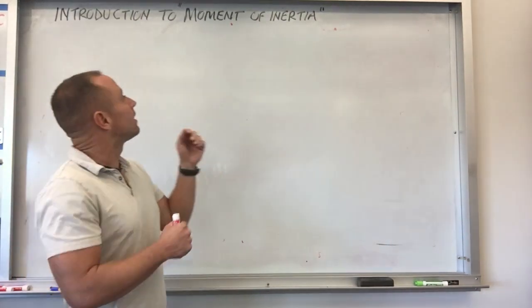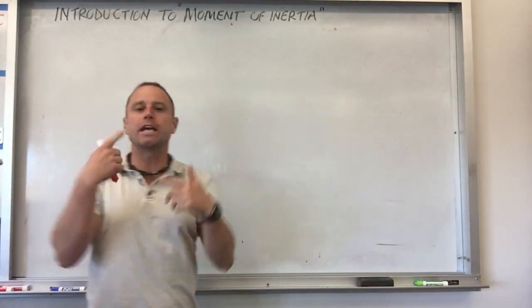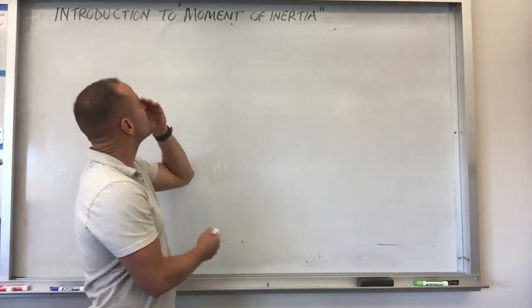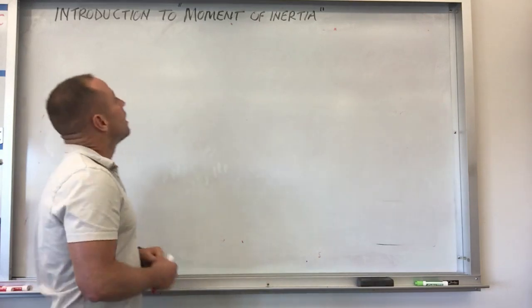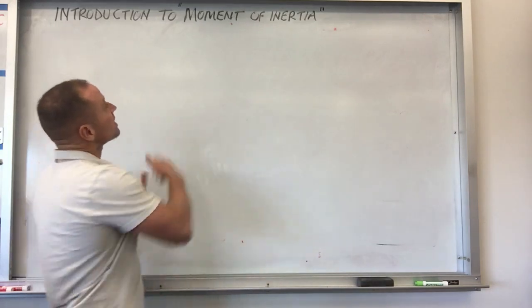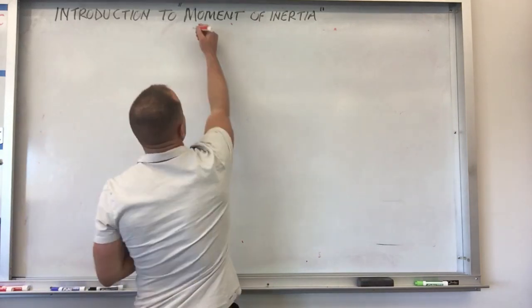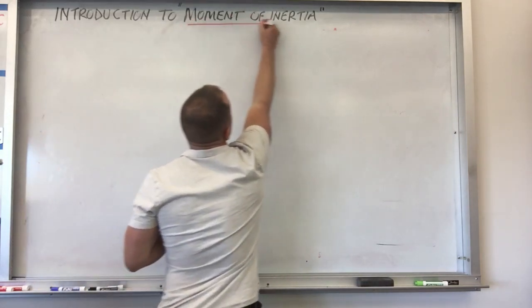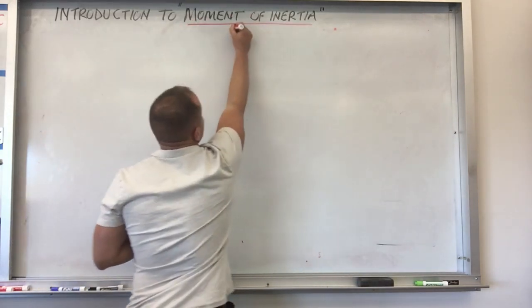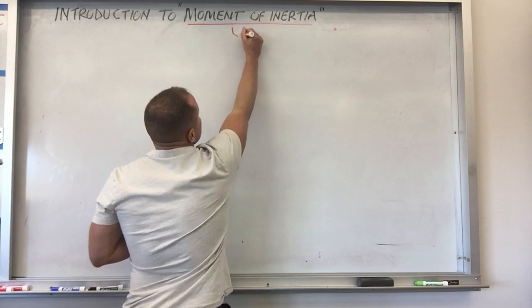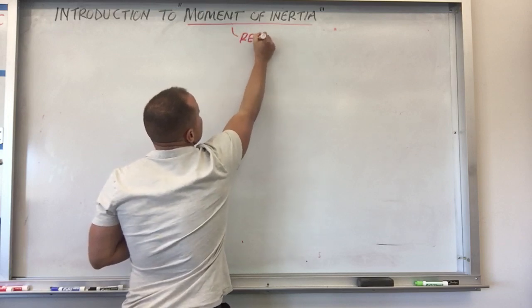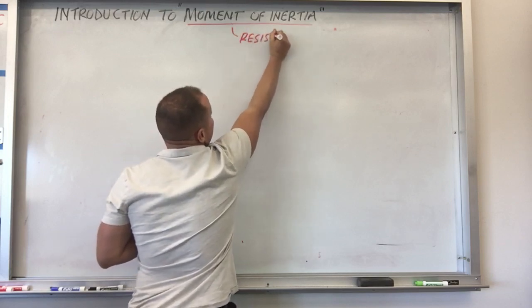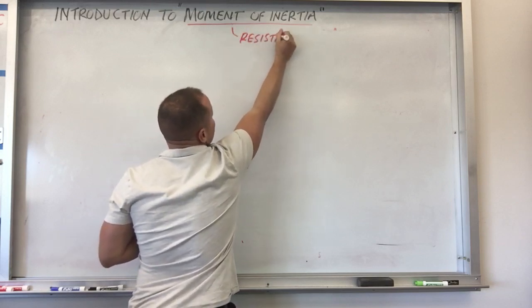Today we're going to take a look at a concept in rotational mechanics called moment of inertia. The most concise way to say what a moment of inertia actually is: it's a measure of an object's resistance to angular acceleration.